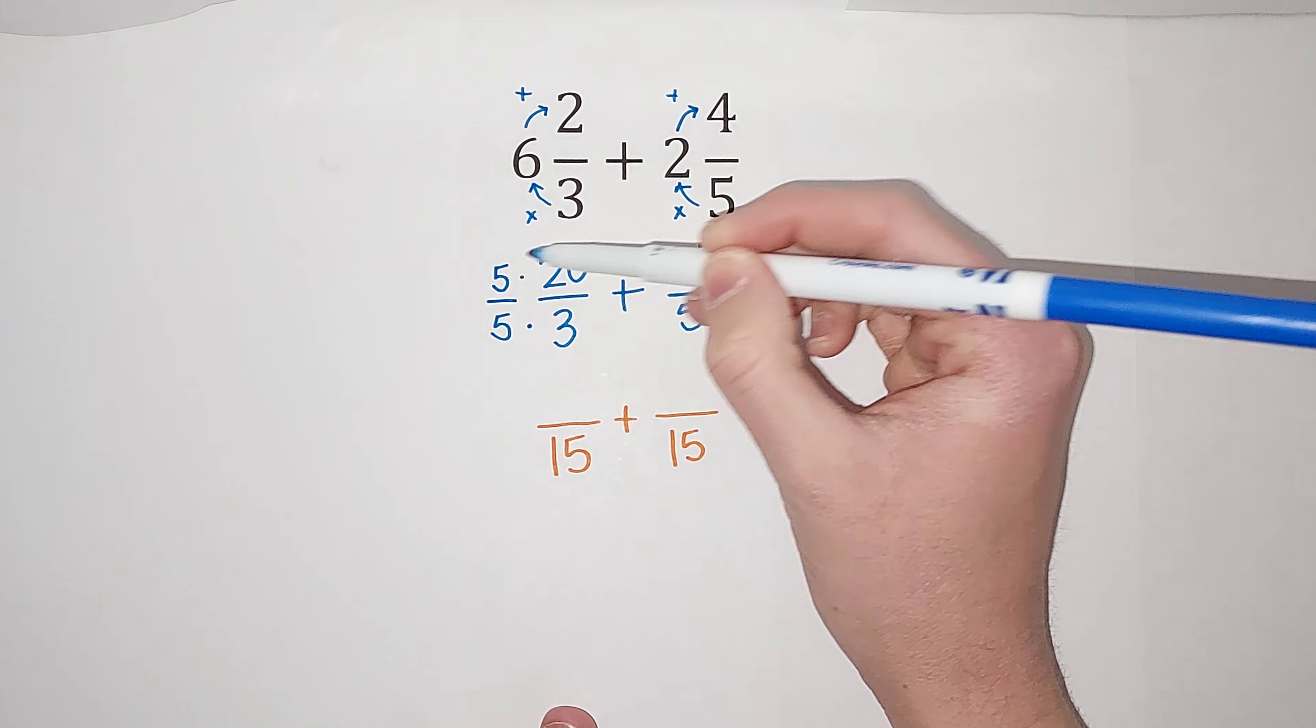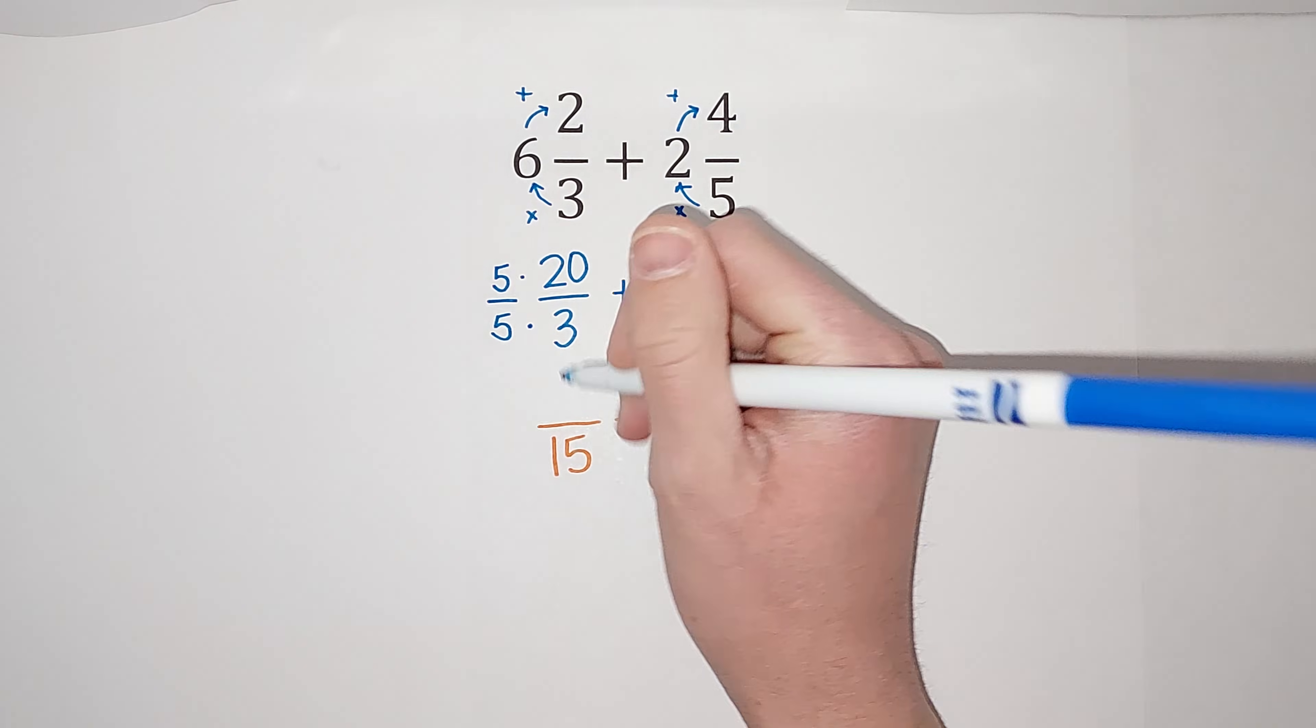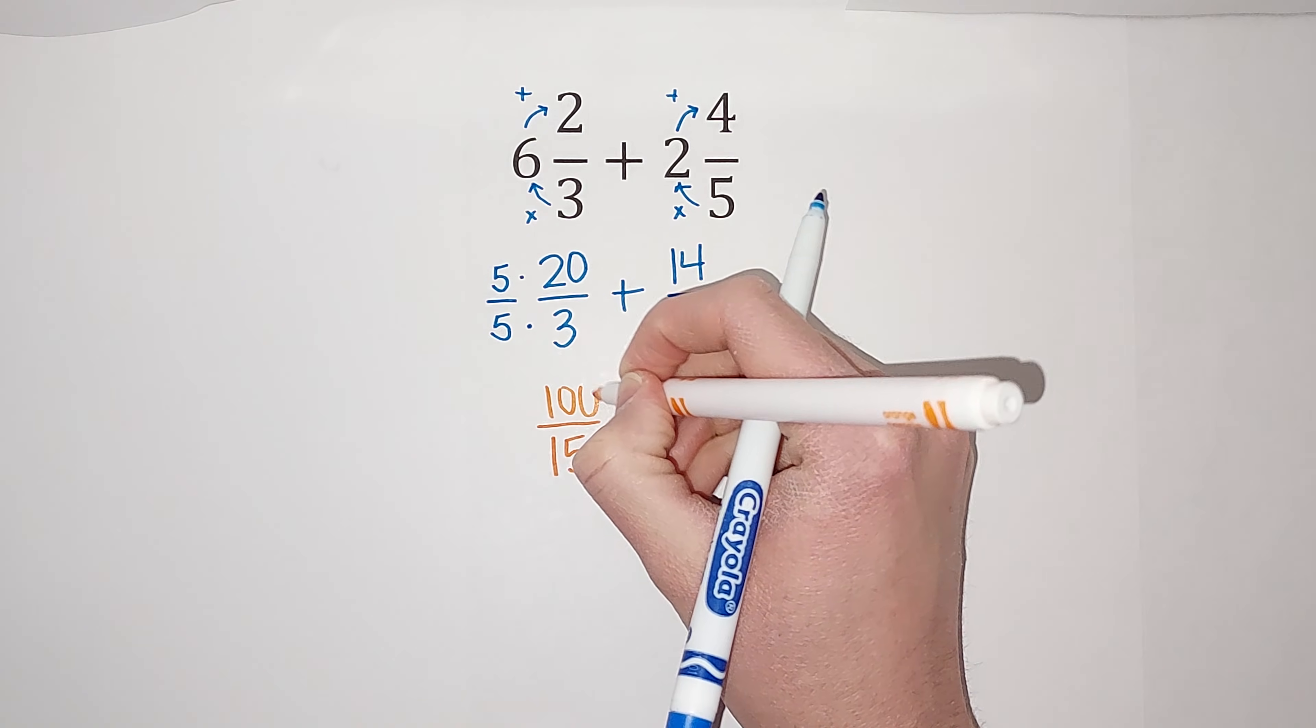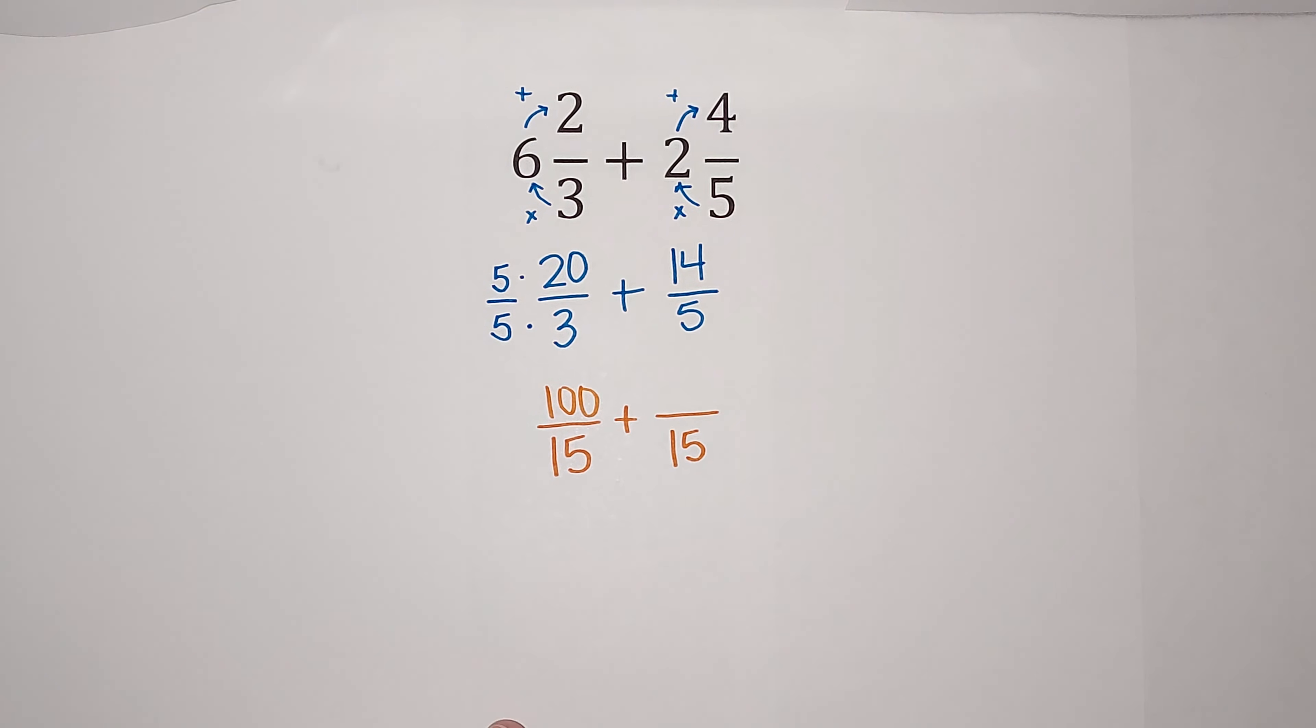So when I multiply, I go straight across. So five times 20 gives me 100. Oh, let me get my orange. Hold on. A hundred. Five times three gives me 15, which is what we wanted, right?